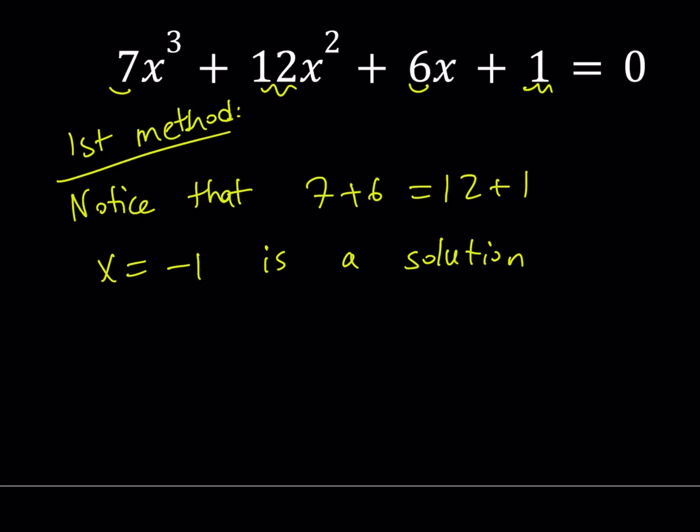So now, since we know that x equals negative 1 is a solution, we can actually reduce the power here and turn it into a linear times a quadratic. Let's go ahead and do it. And for that one, I also have another trick that I shared with you in many other videos. I'm going to start off with this and I want to get x plus 1 as one of the factors.